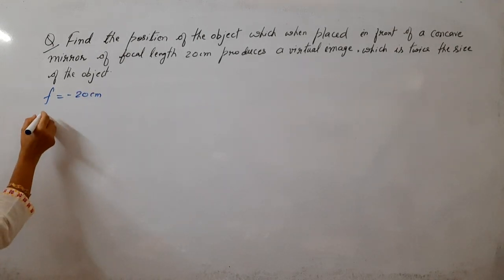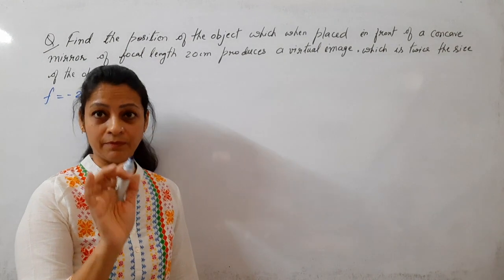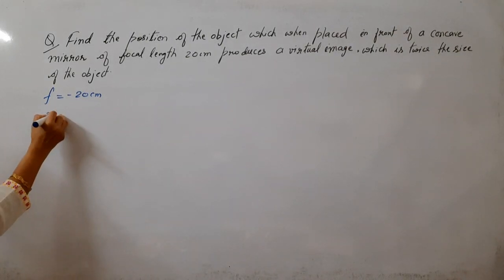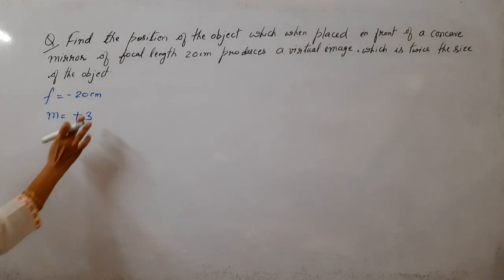Diya hai produces a virtual image. Virtual image, agar diya hai means magnification plus me hooga. Mirrors me ya lenses me, dono me hi, agar aapko diya hai virtual means plus me hooga ye. Kitna ye twice.